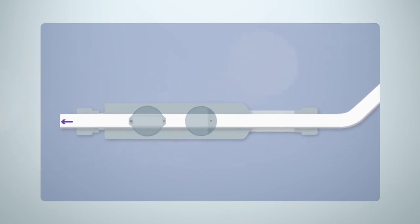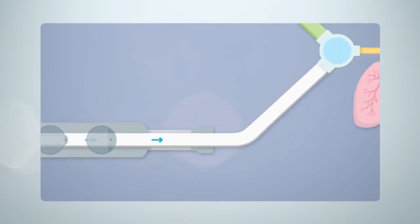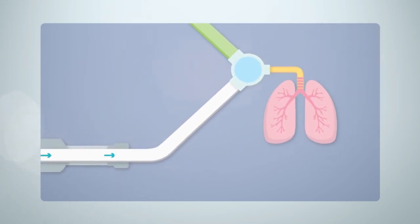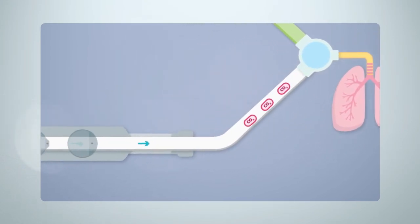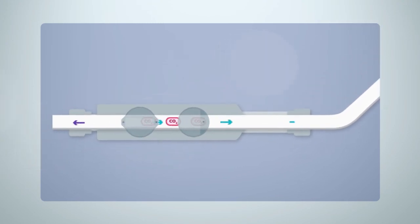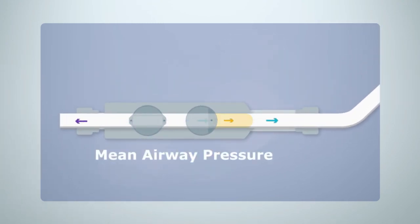It works using a third rear-facing jet which alternates with the forward-facing jet to create a negative flow thereby facilitating active expiration and aiding in the clearance of carbon dioxide. The second forward-facing jet is now used to control the mean airway pressure.